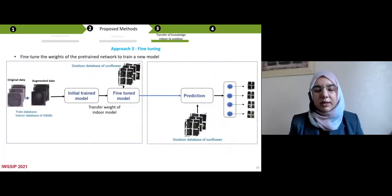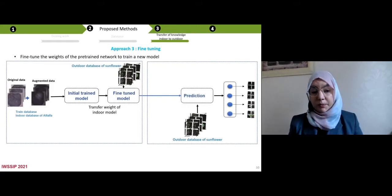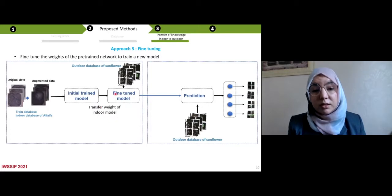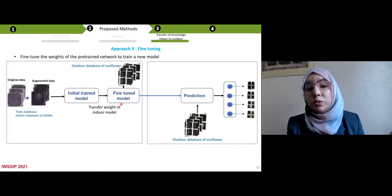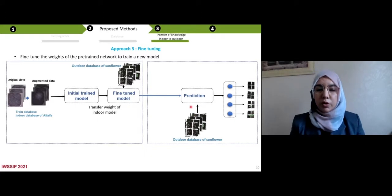So for the third approach, we try to add real data in our training model. For that, we pre-trained model using the synthetic dataset. And after that, we transfer weights to train and to fine-tune a model using some part of real data. And after that, we predict on real data.